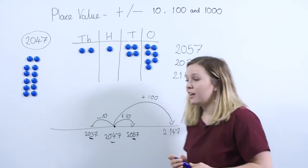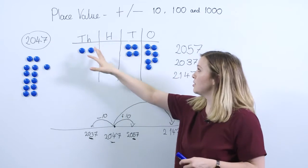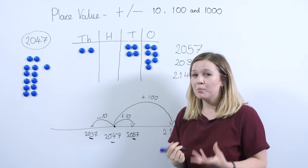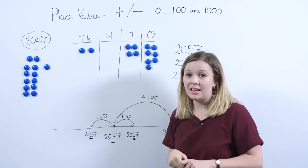The bit where it might get a bit trickier is if you're taking away a hundred from our starting number. So if we go back to starting with 2047 and I want to take away a hundred, pupils might get a little bit stuck because there's no hundreds here.